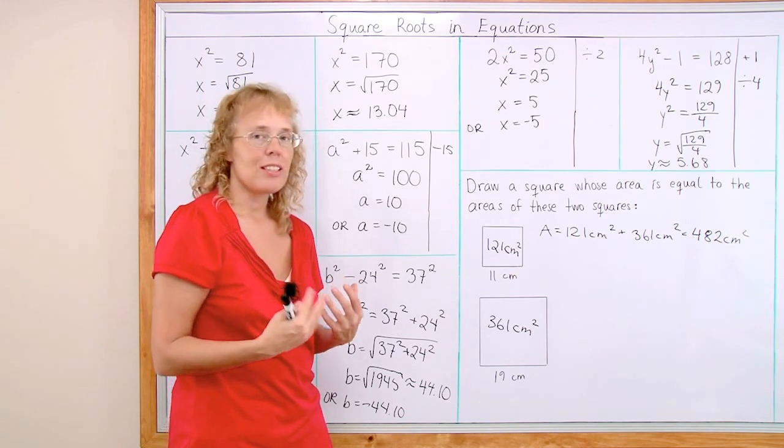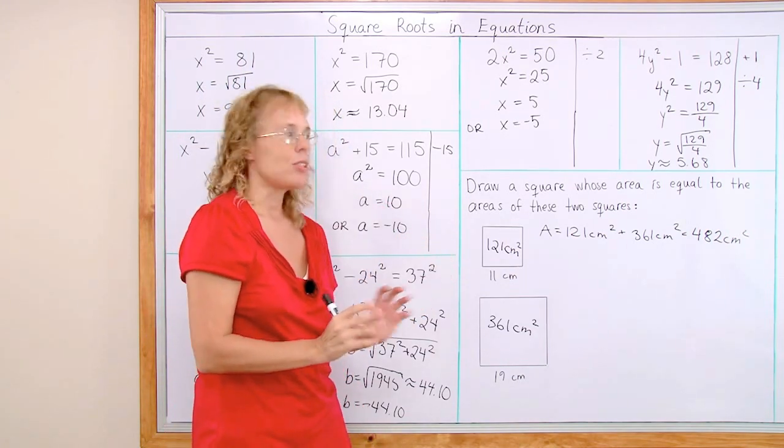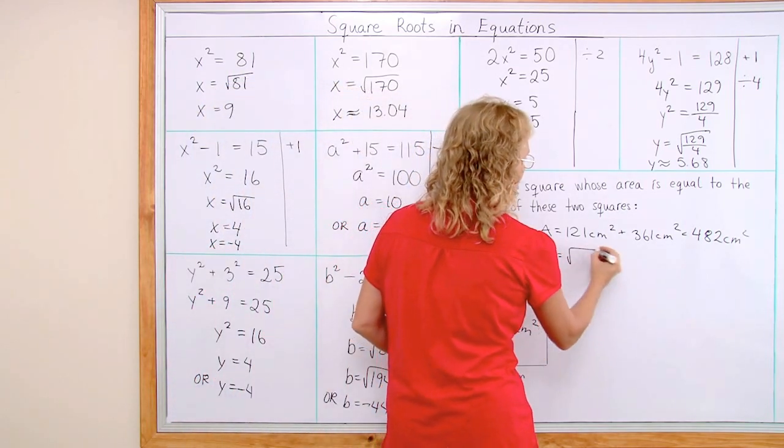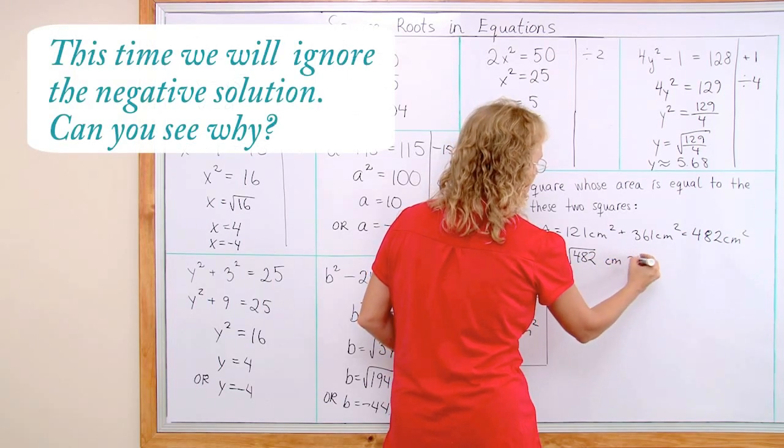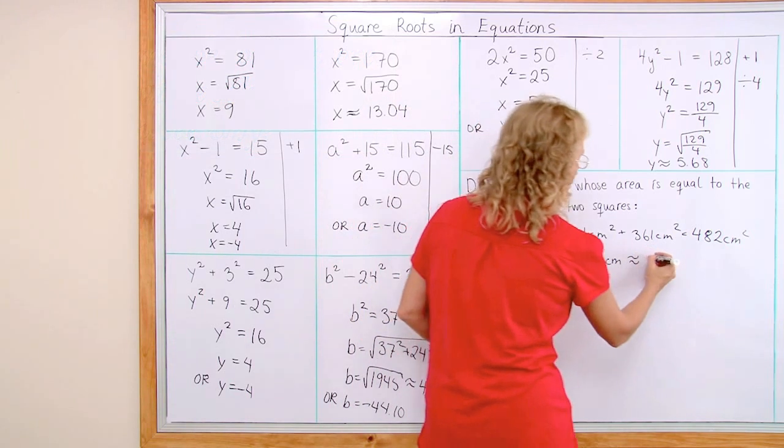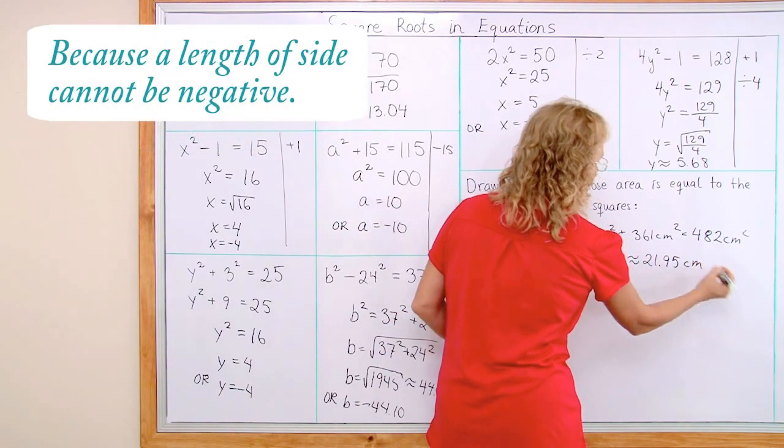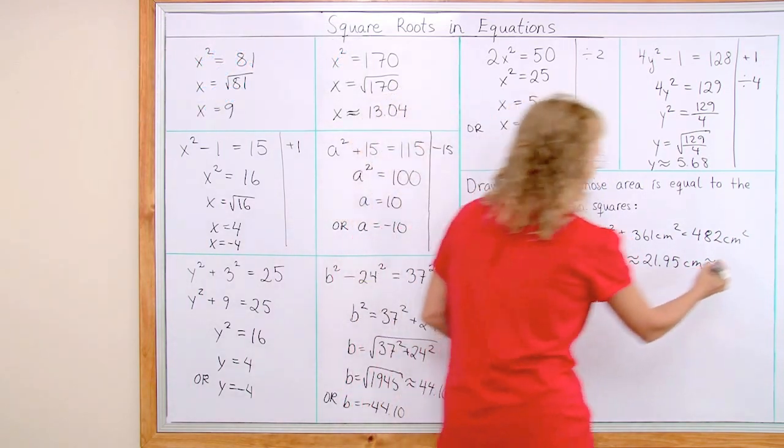And this ties in with square roots right. Now that you know the area of the square, to find the side length you take the square root of that number. The side will be square root of 482, that many centimeters. The calculator again helps. And this is about 21.95 centimeters, which for my practical purposes will be 22 centimeters.